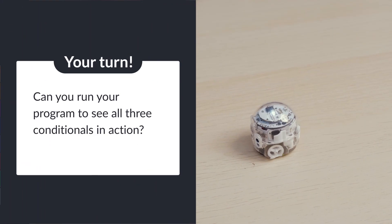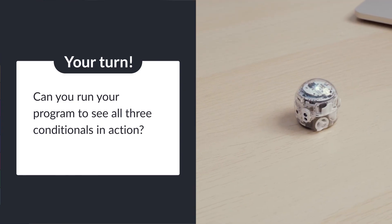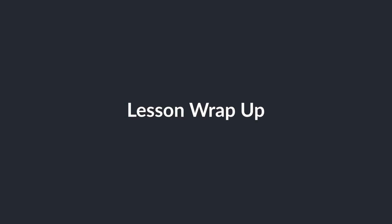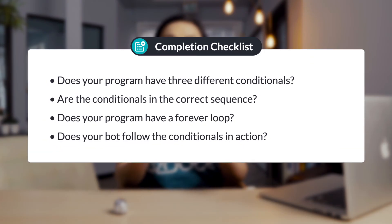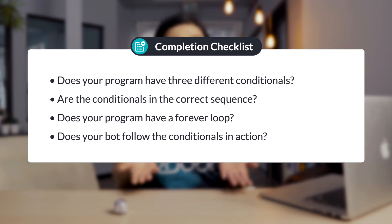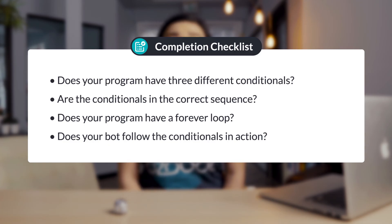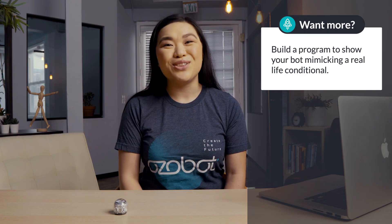Can you run your program to see all three conditionals in action? Check your work: Does your program have three different conditionals? Are the conditionals in the correct sequence? Does your program have a forever loop? Does your bot follow the conditionals in action? If you're looking for more to do, you can use the sensor blocks to program your own three conditionals, write statements to show three to five conditional statements in real life, or build a program to show your bot mimicking a real-life conditional.